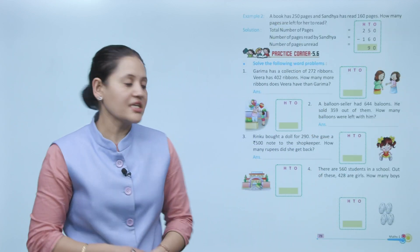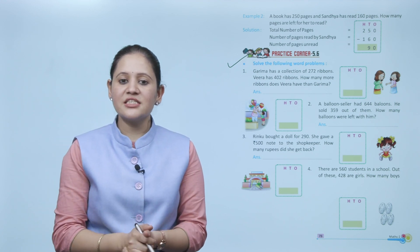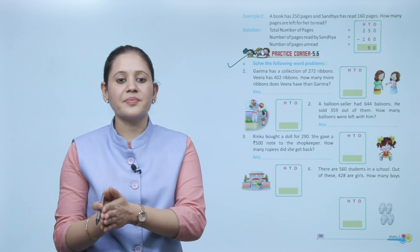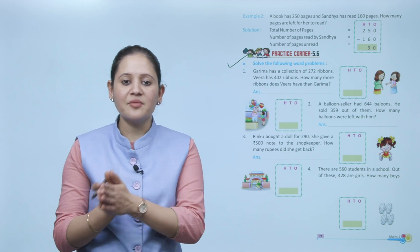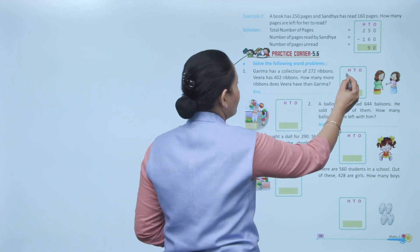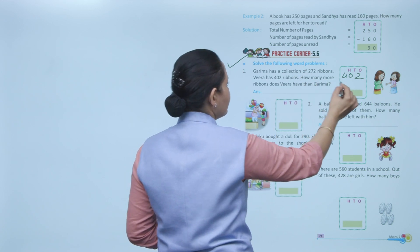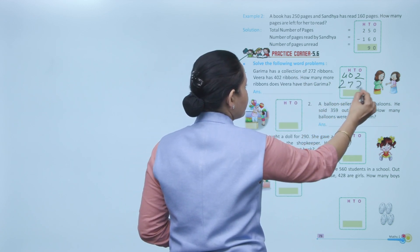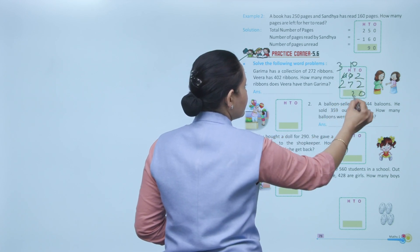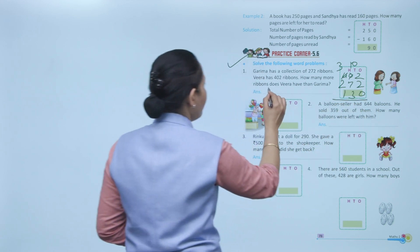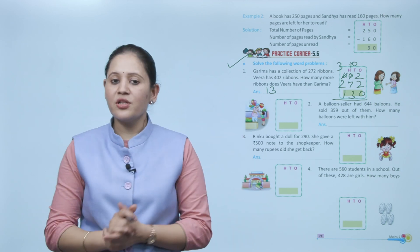Practice corner 5.6 — solve the following word problem. Garima has 272 ribbons and Veera has 402 ribbons. How many more ribbons does Veera have than Garima? Since Veera has more, we subtract Garima's ribbons from Veera's: 402−272. Ones: 2−2=0. Tens: borrow, 10−7=3. Hundreds: 3−2=1. Veera has 130 more ribbons than Garima.